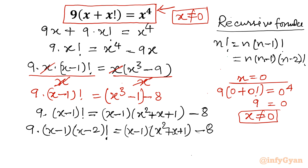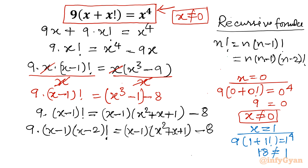Now I want to divide this equation by (x minus 1), so x equal to 1 must not be a solution. Let's check: putting x equal to 1 in the original equation gives 9 times 1 plus 1 factorial on the left, which is 9 times (1 plus 1) equals 18, while the right hand side is 1 to the power 4 equals 1. Since 18 does not equal 1, x equal to 1 is not a solution, so we can divide both sides by (x minus 1).